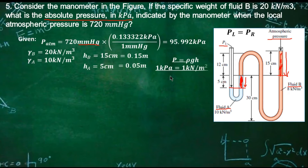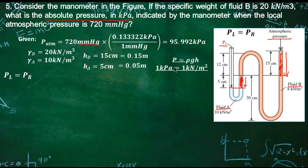Note that 1 kilopascal is equal to 1 kilonewton per meter squared. Always remember that, because we need this conversion since the specific weight is given in kilonewton — we'll use it to convert everything to kilopascal.